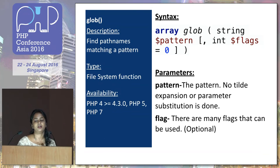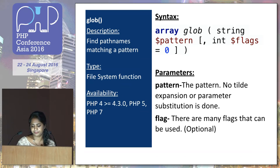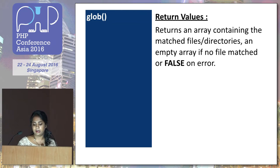Next is glob. Glob is used to locate pathnames matching a particular pattern. It's a filesystem handling function, available in PHP 4.3 and greater. It takes two parameters: one is a pattern and the other is a flag, which is optional. There are many flags that can be used — you can refer to the PHP manual for those. The return value is an array of matching files. An empty array is returned if no file is found, or false in case of any error.